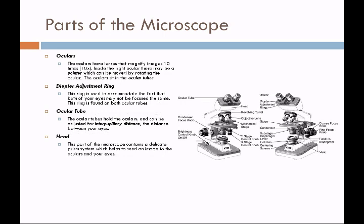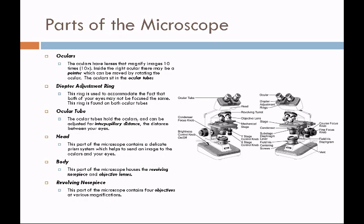This is a compound microscope. It has two sets of lenses and whatever you're looking at is actually going to be upside down or reversed from what you see on the slide. That really isn't much of a problem in microbiology because we're looking at microbes — they don't have heads or tails. The body is the part of the microscope that houses the revolving nosepiece, and hanging down from the revolving nosepiece are the objective lenses.